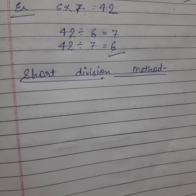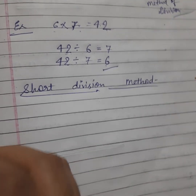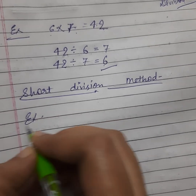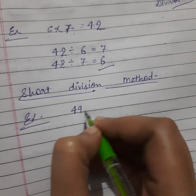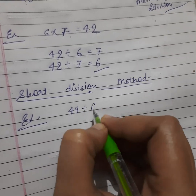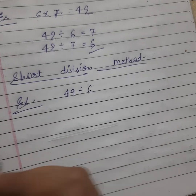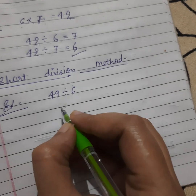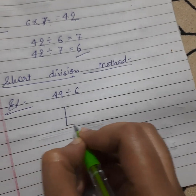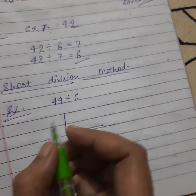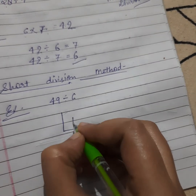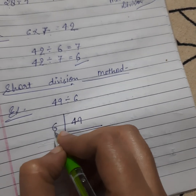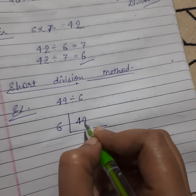Now for short division. Suppose the example is forty-nine divided by six. First, let's arrange it as it is given in the book: forty-nine inside and six outside. Six is the divisor and forty-nine is the dividend.